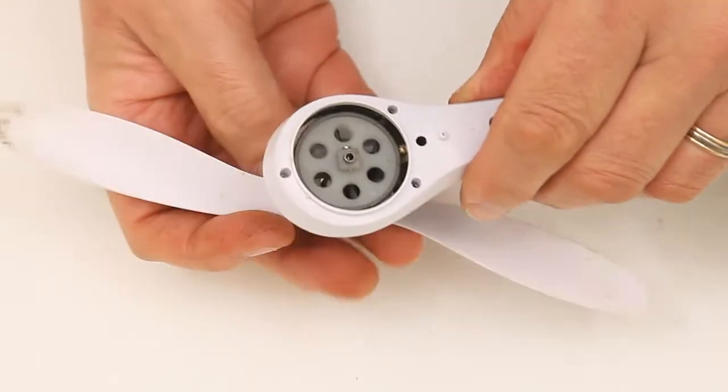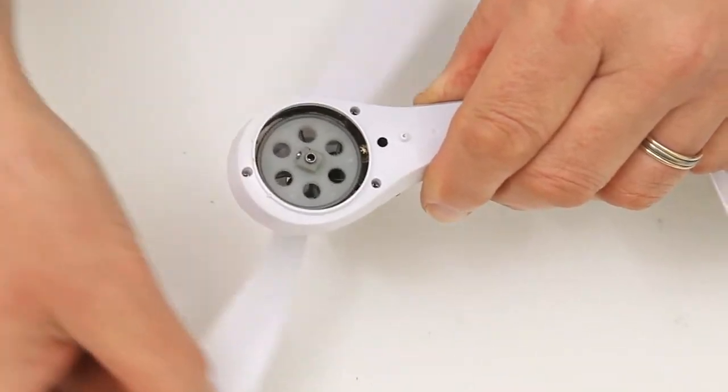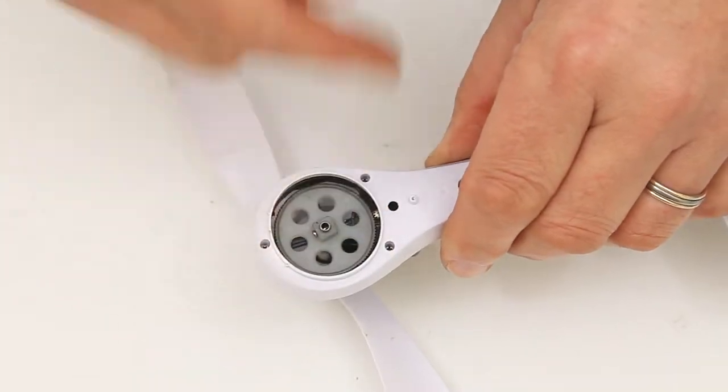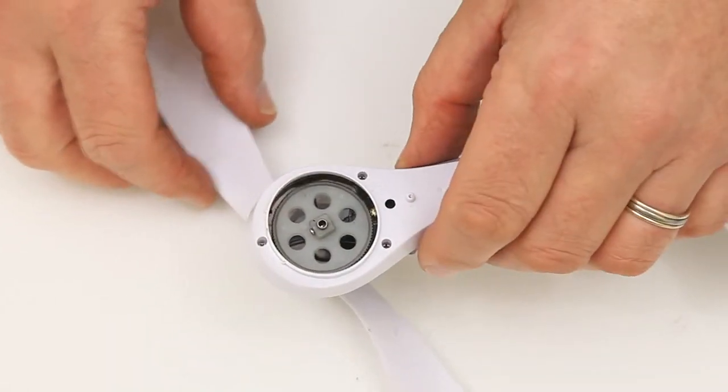Just to show you how bad that is - there we go, she's not touching anything at all there. When you've got a little bit of turn on it, it manages to grab the next bit of the cog and spin it round.